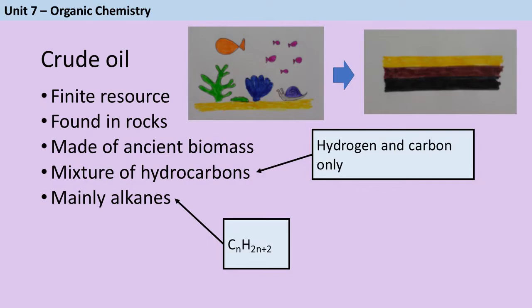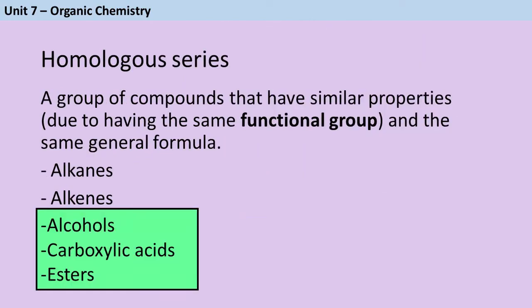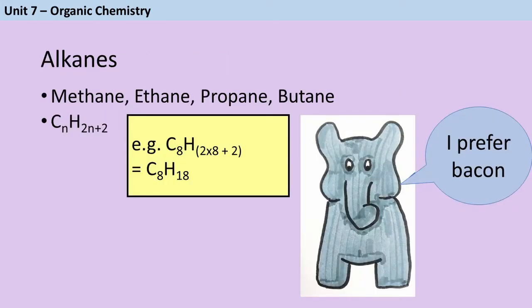Alkanes are an example of a homologous series, so that's a group of compounds that have similar properties because they have the same functional group and the same general formula. If you're taking combined science, you need to know about alkanes and alkenes, and if you're taking triple science, you're also going to need to know about alcohols, carboxylic acids, and esters. You should be able to name the first four alkanes, which are methane, ethane, propane, and butane. I like to remember this with most elephants prefer bacon.